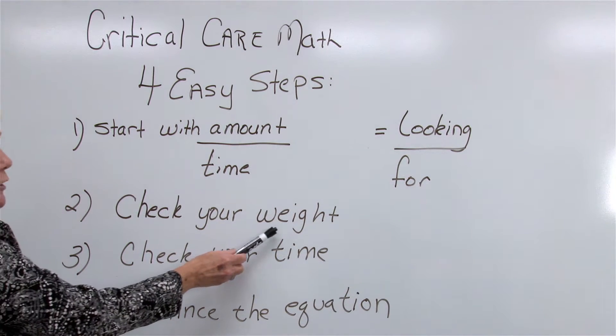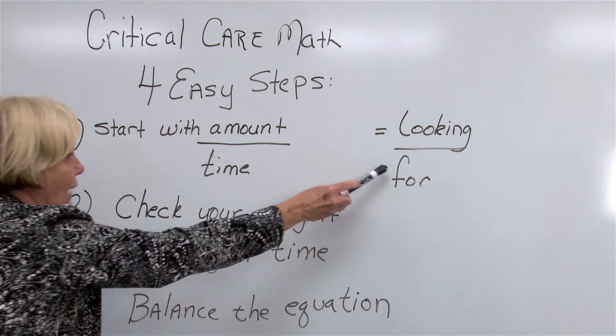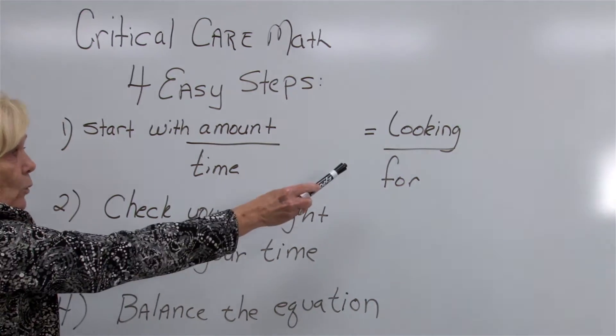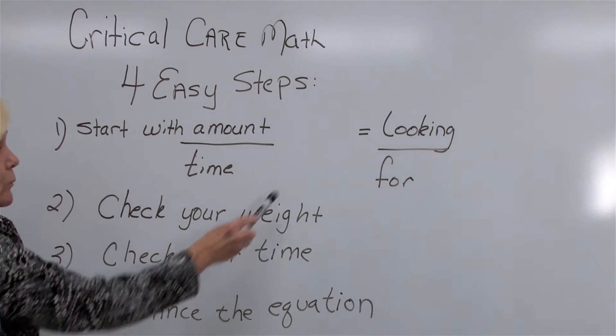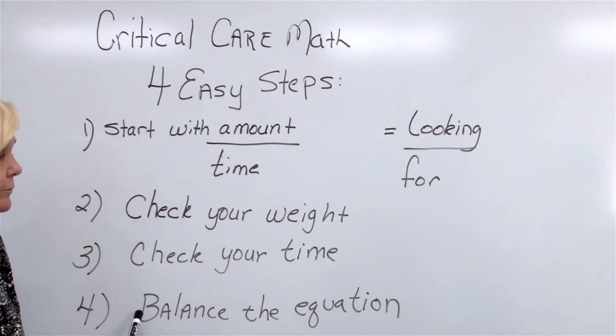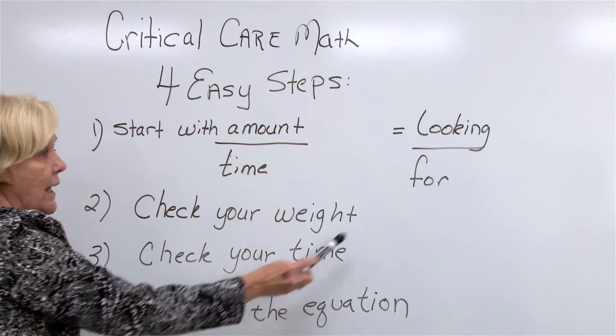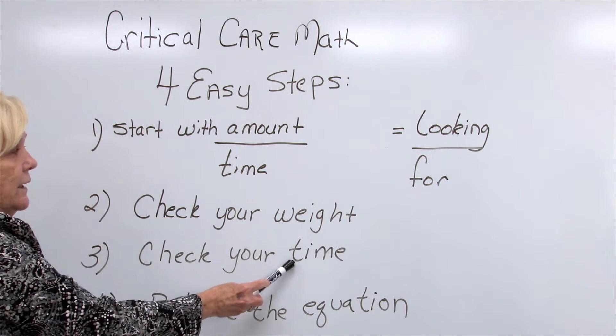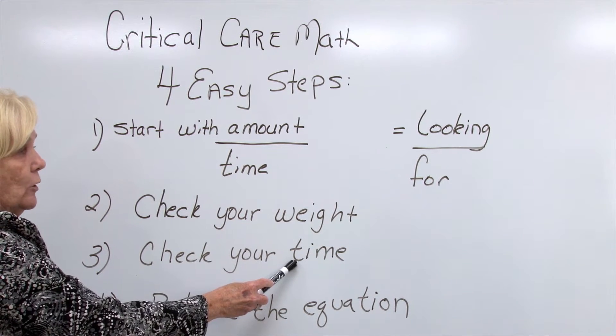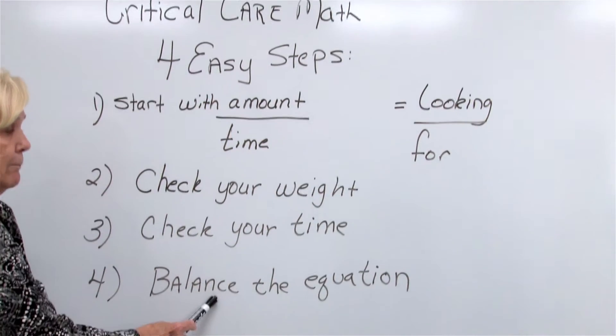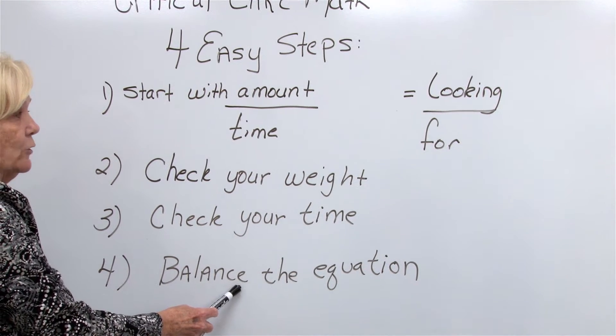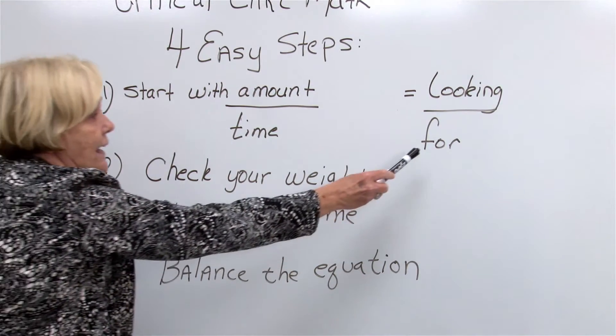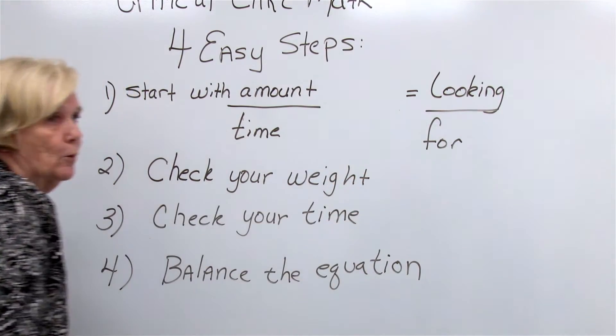The second step we're going to do is check our weight. If we have a weight in the answer, then we need to get the weight in the problem. If we don't have a weight in the answer but it's in the problem, then we need to make sure it crosses out. We're going to check our time - if what we're looking for is in hours, we have to make sure we're in hours. If what we're looking for is in minutes, we have to make sure we're in minutes. And then we're going to balance the equation. We're going to make sure that after we have all of our numbers written beside the words they go with, they equal what we're looking for, or the heart of our problem.